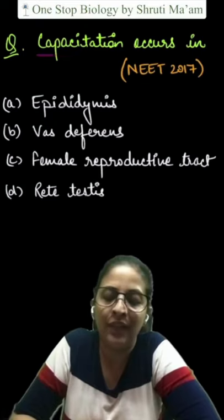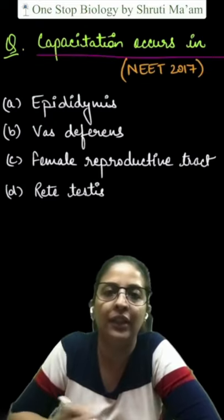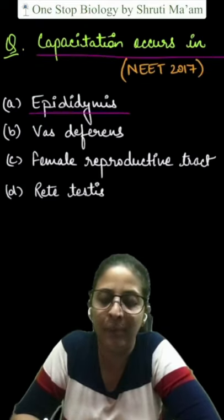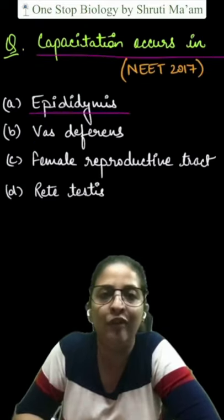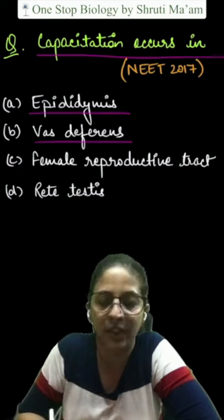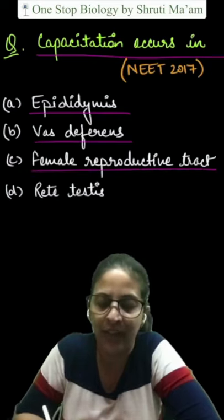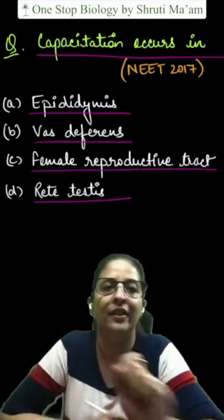The question says: capacitation occurs in — and the options are A. Epididymis, B. Vas deferens, C. Female reproductive tract, and D. Rete testis.